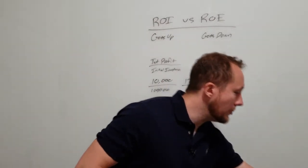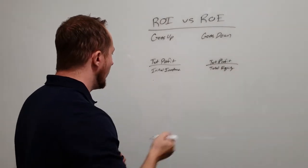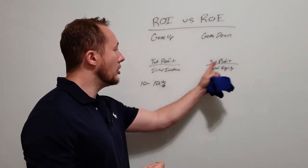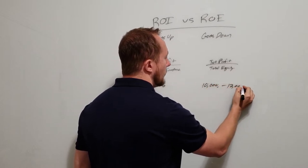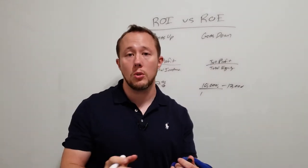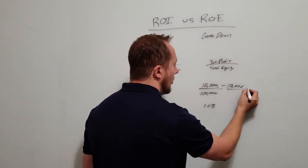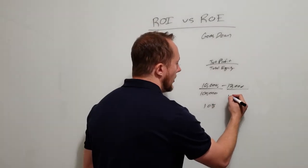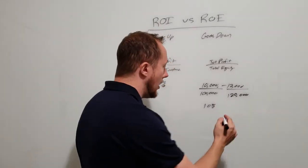Now let's look at your return on equity. Your ROI has gone from 10% to 12%. So your total profit goes from $10,000 to $12,000 as well. But here the denominator changes. Day one of purchasing, assuming you didn't add any value, you have $100,000 in equity, so you have 10%. But now let's say there's some appreciation — let's say this goes up to $120,000. So now you have $120,000 in equity because of appreciation and equity pay down.